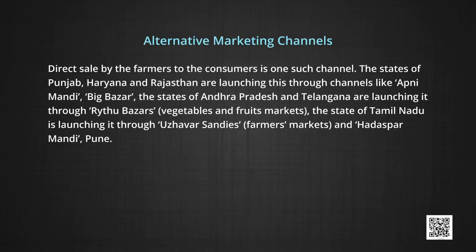There has been significant progress in recent years in making marketing facilities available to farmers. Alternative channels of agricultural marketing are a ray of hope for small and marginal farmers who have been suffering at the hands of middlemen. Direct sale by farmers to consumers is one such channel. The states of Punjab, Haryana, and Rajasthan are launching this through channels like Apni Mandi and Big Bajar. The states of Andhra Pradesh and Telangana are launching it through Ritu Bajars, that is, vegetables and fruit markets.